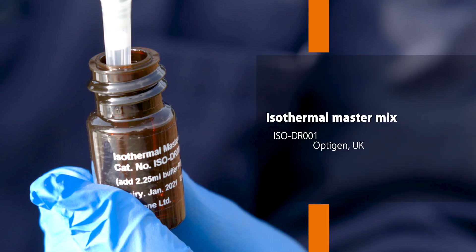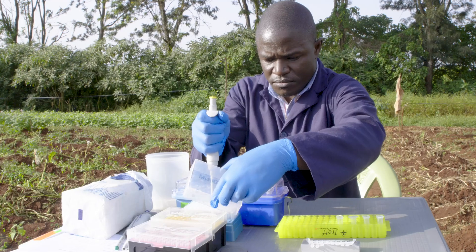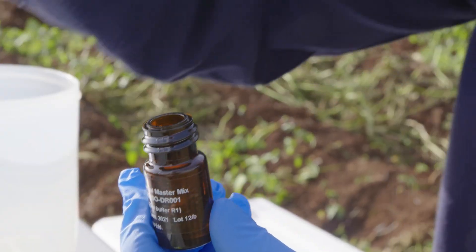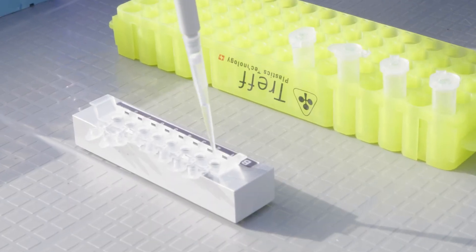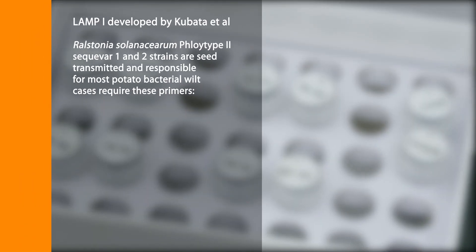The isothermal master mix allows for fluorescence detection of the product on the genome. It is tolerant to the inhibitors present in the plant tissue and soil particles. The primer mixes are made up of two external primers, the forward outer primer or F3 and the backward outer primer or B3, two internal primers, the forward inner primer FIP and backward inner primer BIP, and one to two loop primers, the loop forward primer FL and or loop backward primer BL.